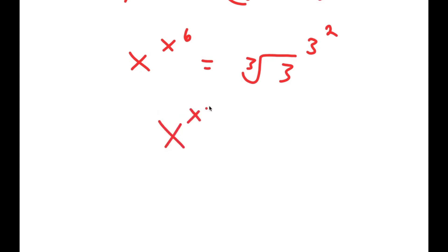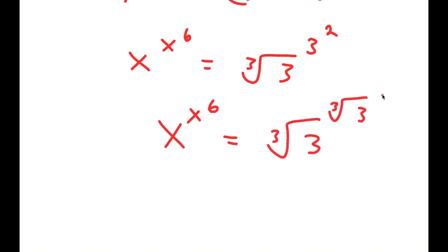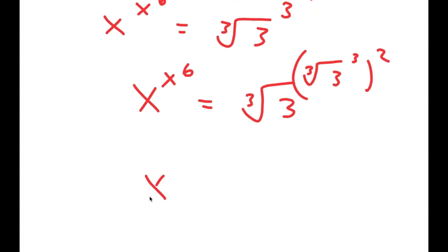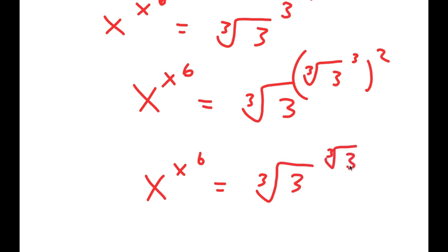From here, I get x to the power of x to the power of 6 is equal to the cube root of 3 to the power of 3 to the power of 2, and this is equal to the cube root of 3 to the power of the cube root of 3 to the power of 6.